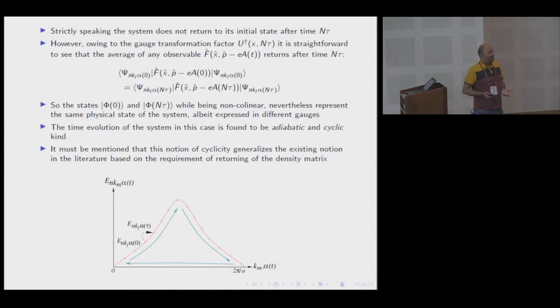However, because its origin is from these gauge transformations due to the vector potential, we find that the averages of any gauge invariant or gauge covariant observable return to themselves after N tau times. Here we have a peculiar situation where the averages of gauge covariant observables seem to return to themselves, but we don't seem to be returning on the same ray. Physically, these states are the same, but they are not the same density matrices.